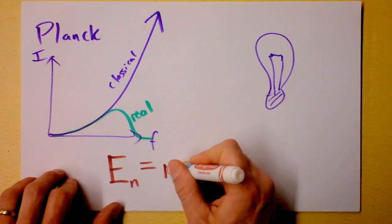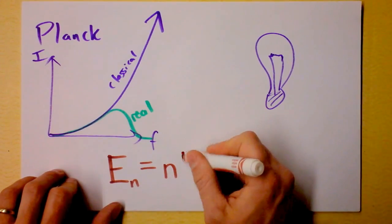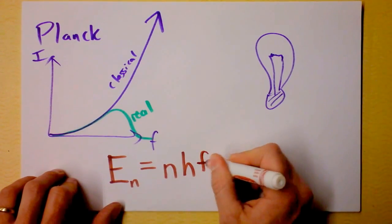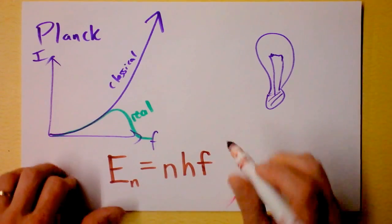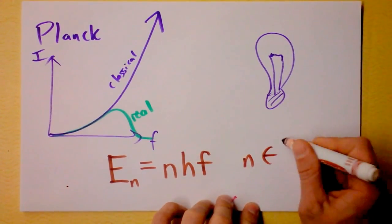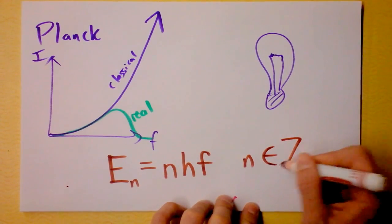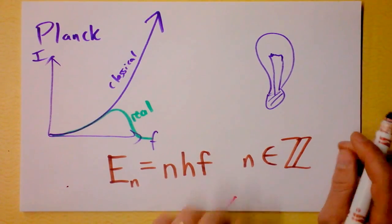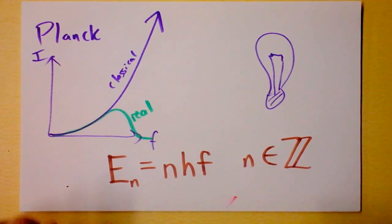Energy is n times h times the frequency of the oscillator. And he's saying that n is some integer. It's probably going to be a very big integer. But here's the issue.